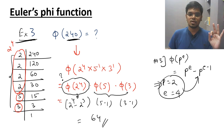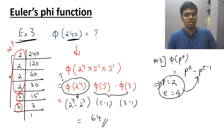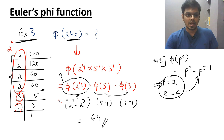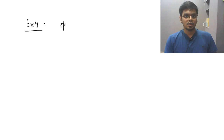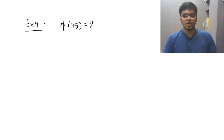Now there is one common mistake, which brings us to example 4. Let me see how many students make this mistake or avoid it. Example number 4: find phi of 49.